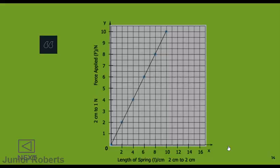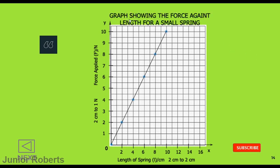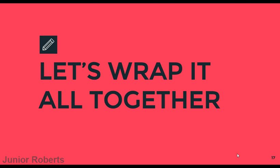Step seven, our final step, requires us to include a suitable title for the graph. As we remember from video one, the title is placed at the top of the graph — here due to limited space I'll place it up here. Our title reads: 'Graph showing the force against length for a small spring.' Our graph is now complete with a title, two fully labeled axes, and all plotted points.